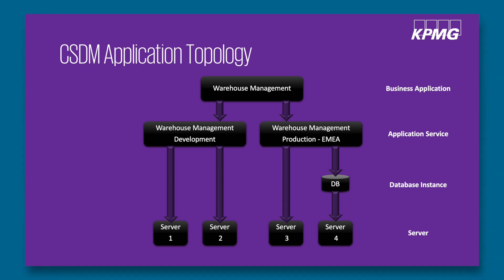I may have four different instances of ServiceNow that all tie differently into the underlying infrastructure — my production server may have 20 mid-servers, while my development instance may have fewer. By being able to differentiate between the services, I can assign different business criticalities. An incident on a production-related mid-server is handled with more speed and urgency than if it's on a dev server. It's really important to differentiate between services, environments, and business applications.